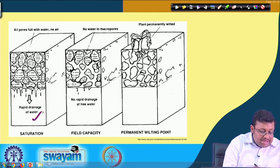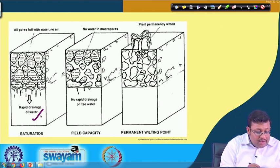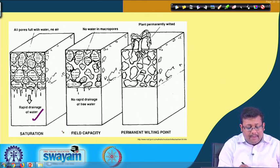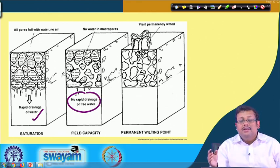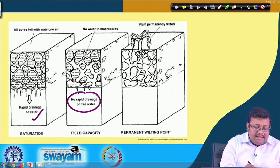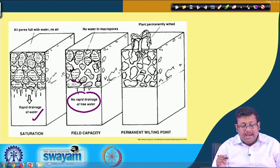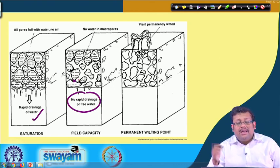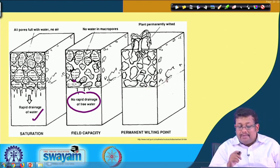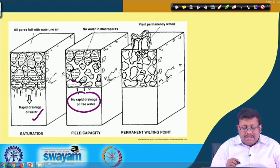At saturation all pores are filled with water, there is no air, and rapid drainage occurs. As the soil dries to field capacity, free water has already drained and only micropores remain filled — macropores are emptied and occupied by air. At permanent wilting point most water has been removed and the plant is permanently wilted.